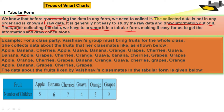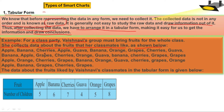Arranging data in tabular form makes it easy for us to get the information and draw conclusions. For example, for a class party, Vaishnavi's group must bring fruits for the whole class. Vaishnavi collected data from the fruits that her classmates like — apple, banana, cherries, apple, kova, banana. These are the data collected by Vaishnavi in Class 4.